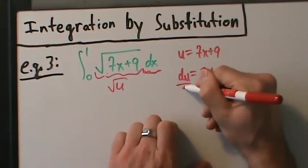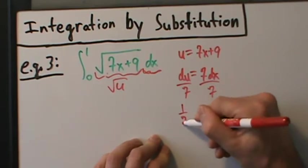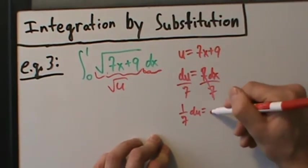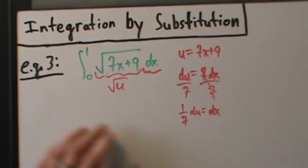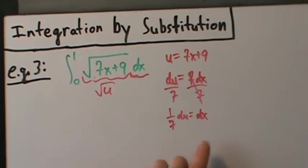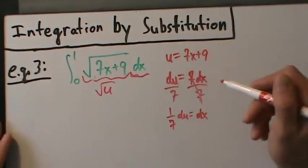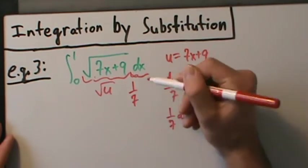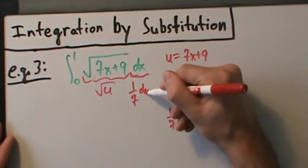If we divide everything by 7, then (1/7) du = dx. That was one of the two ways to think about handling the dx that we talked about with example 1 — if you didn't see that, you might want to go back and check it out.